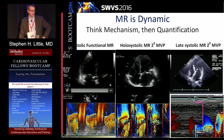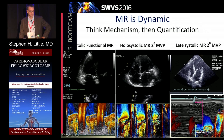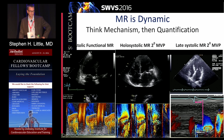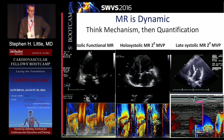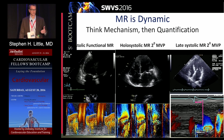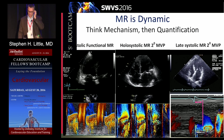Recognizing that MR is dynamic is important — it doesn't always persist throughout the entire cardiac cycle, which is one of the challenges in quantitation. In a case of prolapse where MR flows through all of systole, the measurement is straightforward. But in a case of very late prolapse, at least two-thirds of the systolic interval may have no MR, because the MR takes time to develop. A single color frame might look like a lot of MR, but if it's not present throughout the majority of systole, volumetric quantitation will show it's actually mild MR.